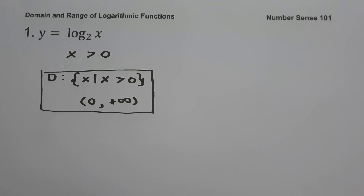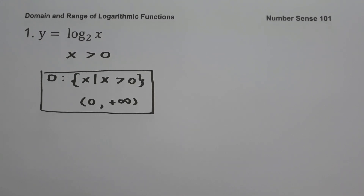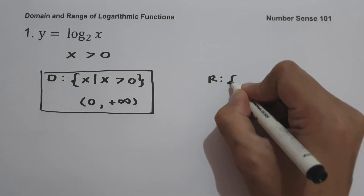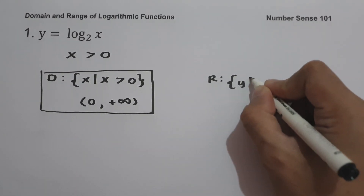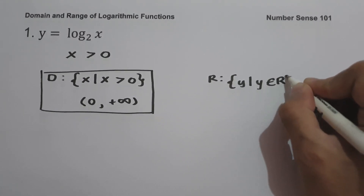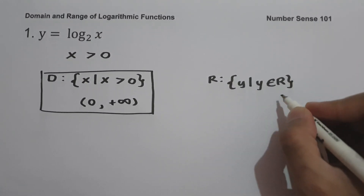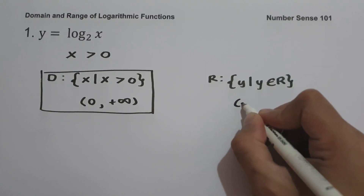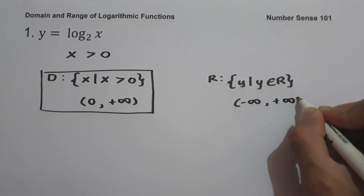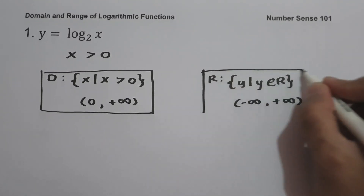To find the range of the given function, always remember the range of a logarithmic function is always all real numbers. So the range is the set of y values such that y is the set of all real numbers, or in interval notation, from negative infinity up to positive infinity. This will be our range.